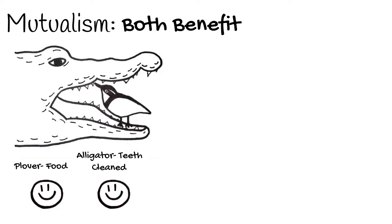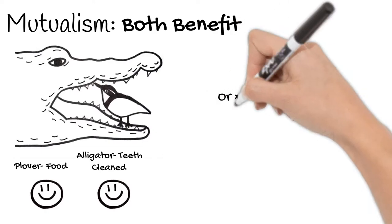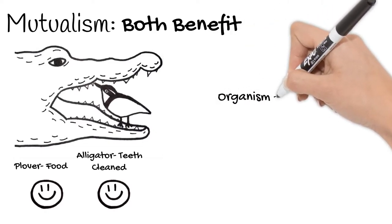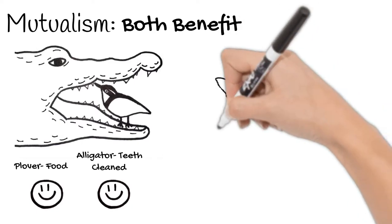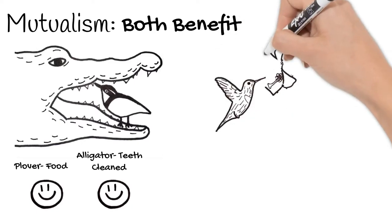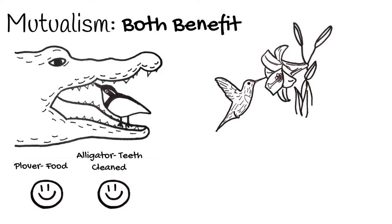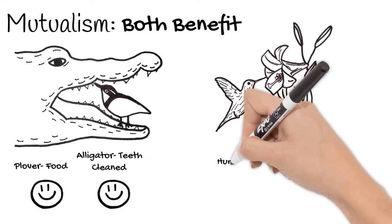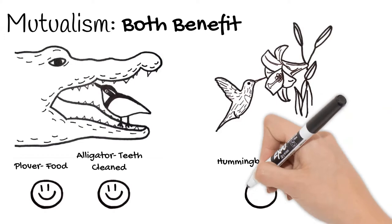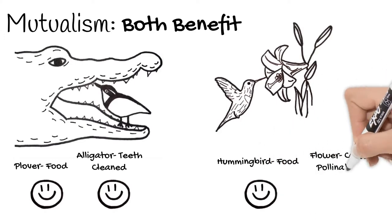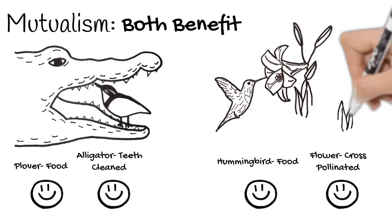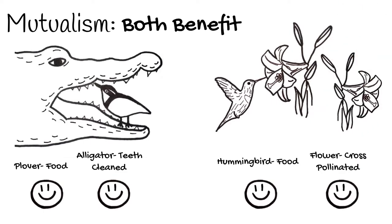Symbiotic relationships don't just happen between animals. The term organism includes all living things. Another common example of mutualism is between hummingbirds and flowers. Hummingbirds drink nectar from flowers, which is their food. The flower benefits from this as it's able to get cross-pollinated for their seeds to mature and grow more flowers.